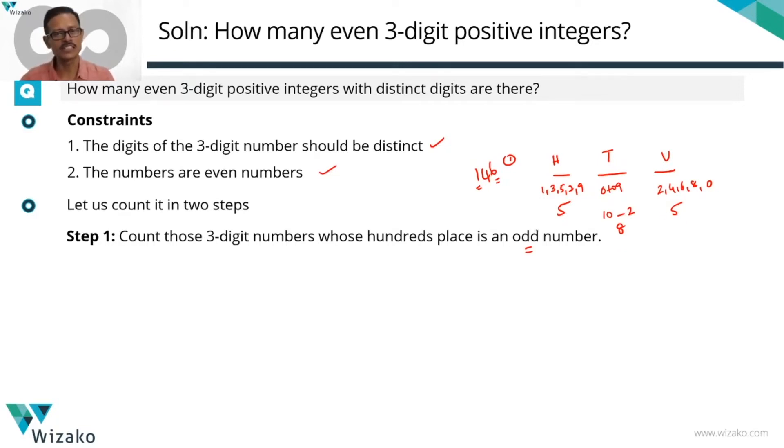So 5 times 8 times 5. That's a number of numbers which are three-digit numbers, which are even numbers, that start with an odd number, or the hundreds place is an odd number. So step 1 done. So we'll compute this value in a while. Not to worry, 40 into 5, which is equal to 200 such numbers exist.